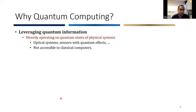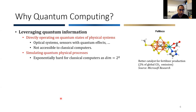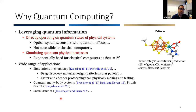Another advantage is that quantum computers can leverage quantum information — information that appears in optical systems or in sensors with quantum effects, which is not accessible to classical computers. Along this line, we can also simulate quantum physical processes, which is exponentially hard for classical computers because the dimension of the system grows exponentially with the number of particles. This has a wide range of applications, including simulation in chemistry, drug discovery, quantum many-body systems, and even social sciences — for example, better catalysts for fertilizer production by simulating the underlying molecules.